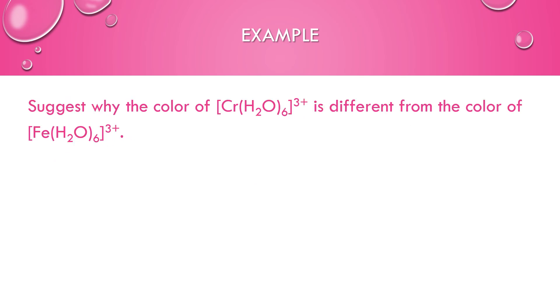For this example, we need to suggest why the color of this chromium water complex is different from the color of this iron water complex. And you'll notice they have the same charge. And because water is neutral, they must have the same oxidation state. So we've got the same ligand, same oxidation state. But the only thing different is the identity of the transition metal itself. And that's going to be why they have a different color. Most likely because they have different numbers of protons. It's going to require a different amount of energy to promote an electron from one part of that split d sub-level to another.